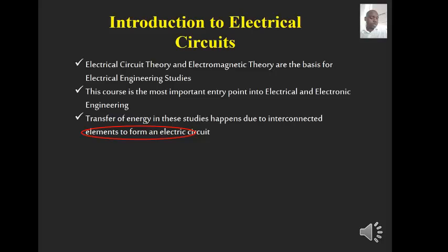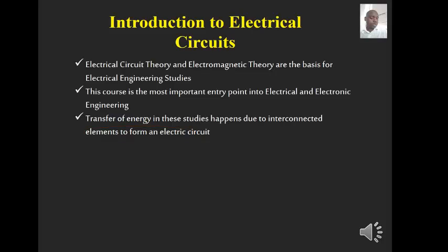An electric circuit is an interconnection of different components. It can be shown in a simple circuit whereby you have a battery, a lamp, and a load. Currents will move from the positive through the load back to the negative, and the circuit is complete in that way.